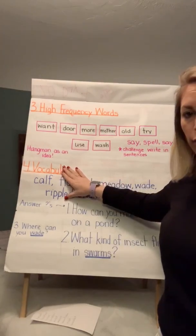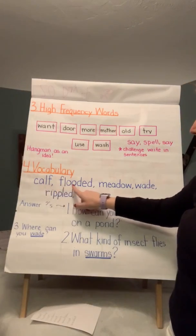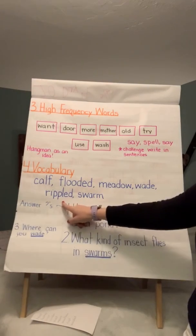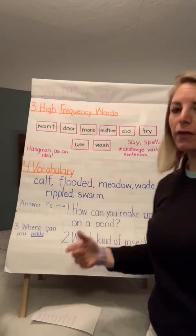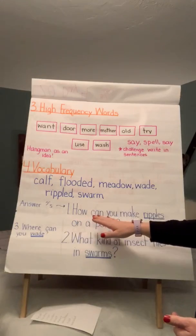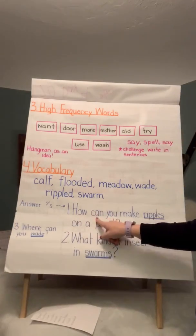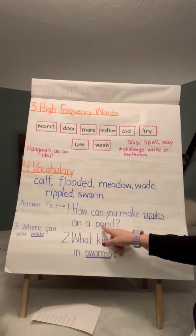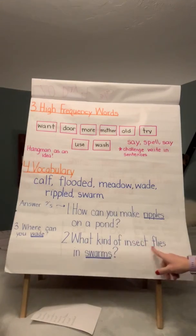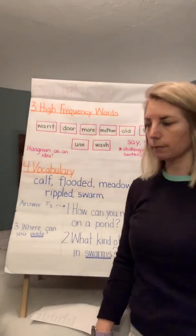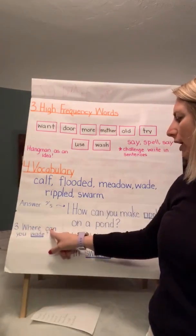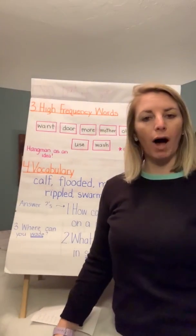We're going to move on to vocabulary: calf, flooded, meadow, weighed, rippled, swarm. Think about those words. I'm going to ask you a few questions. How can you make ripples on a pond? What kind of insect flies in swarms, and do you think you could hear them coming? Where can you wade, and why would you wade?